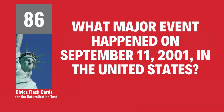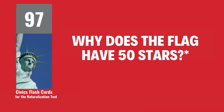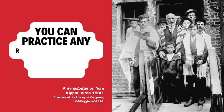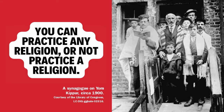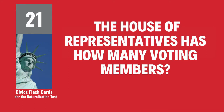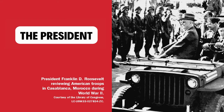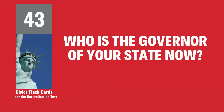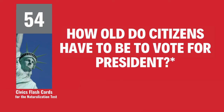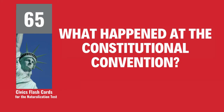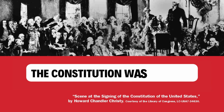What major event happened on September 11, 2001, in the United States? Terrorists attacked the United States. Why does the flag have 50 stars? Because there is one star for each state. What is freedom of religion? You can practice any religion, or not practice a religion. The House of Representatives has how many voting members? 435. Who is the Commander-in-Chief of the Military? The President. Who is the Governor of your state now? Kathy Hochul. How old do citizens have to be to vote for President? 18 and older. What happened at the Constitutional Convention? The Constitution was written.